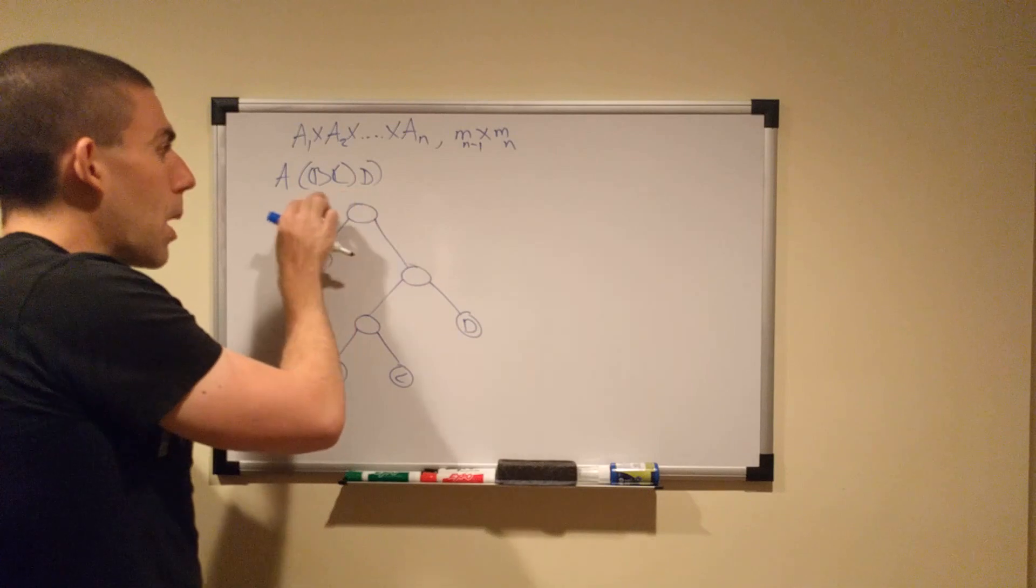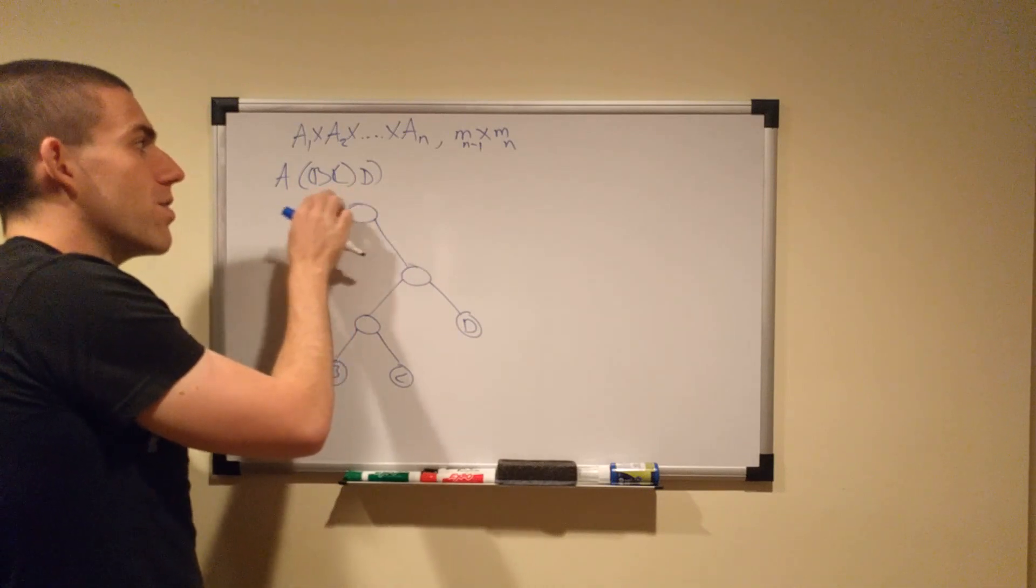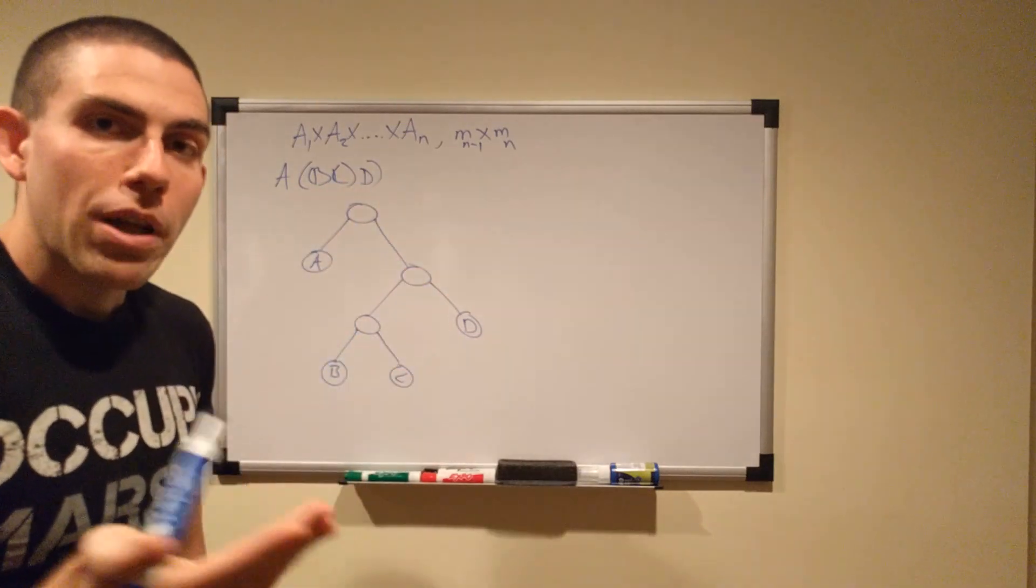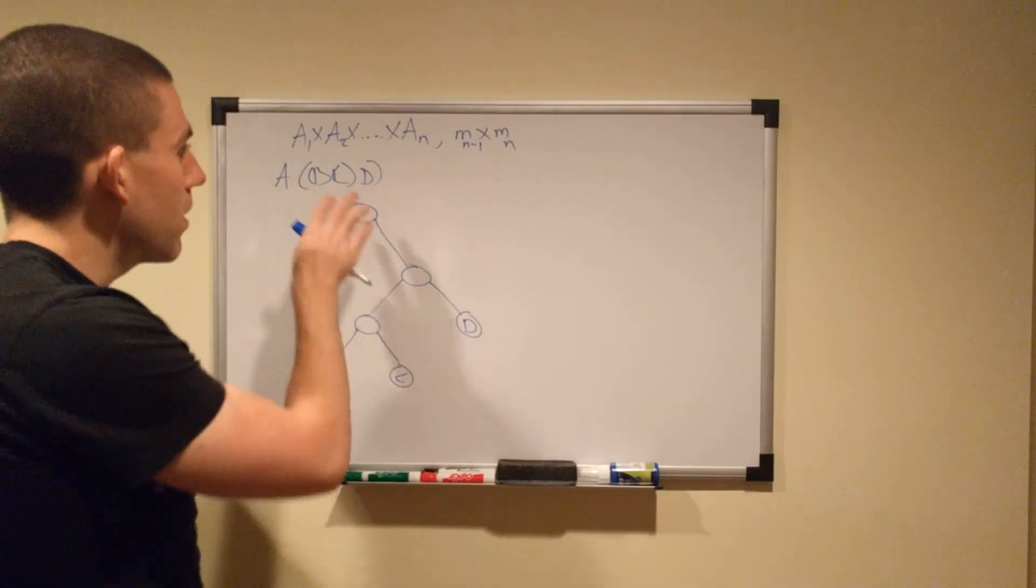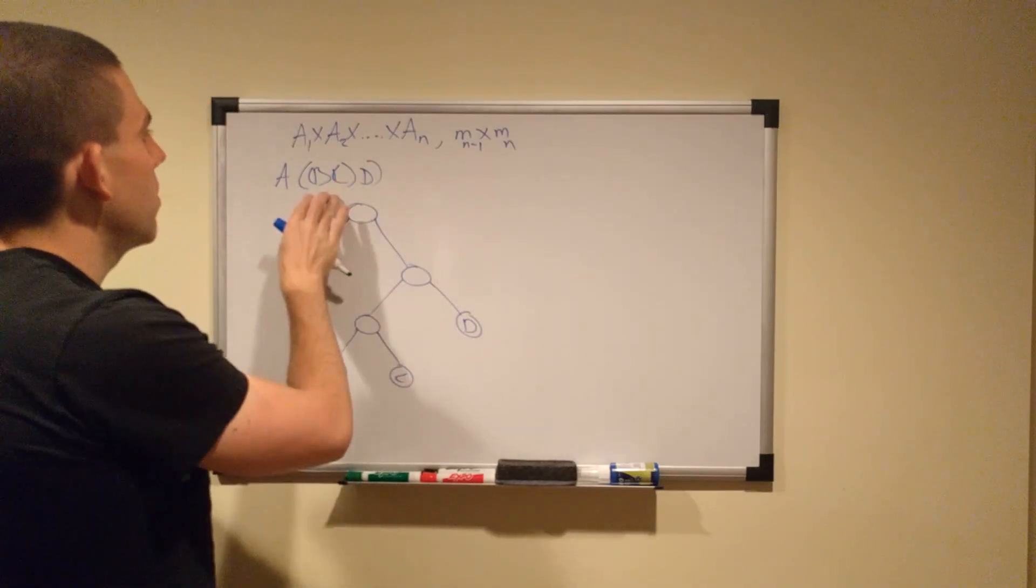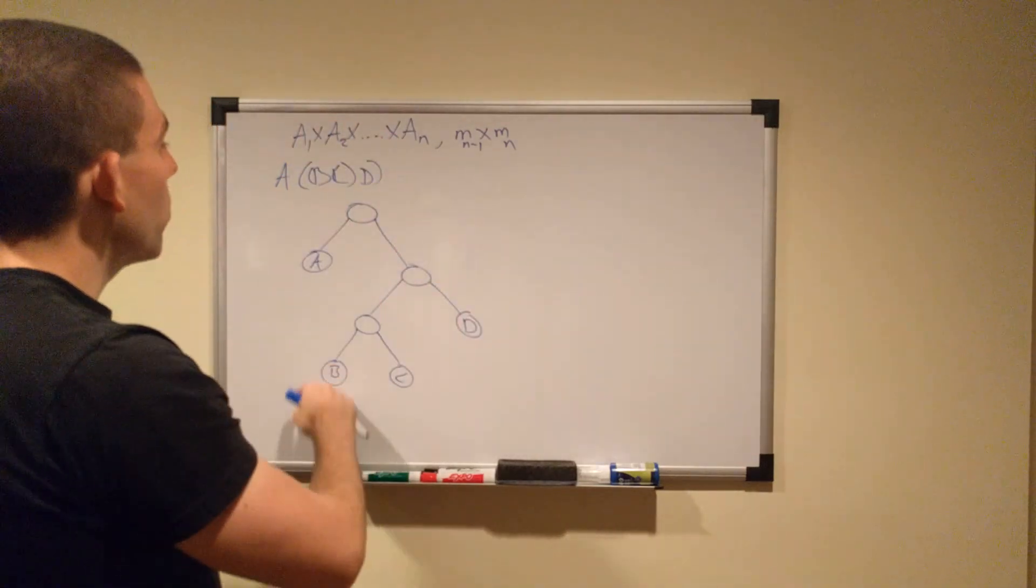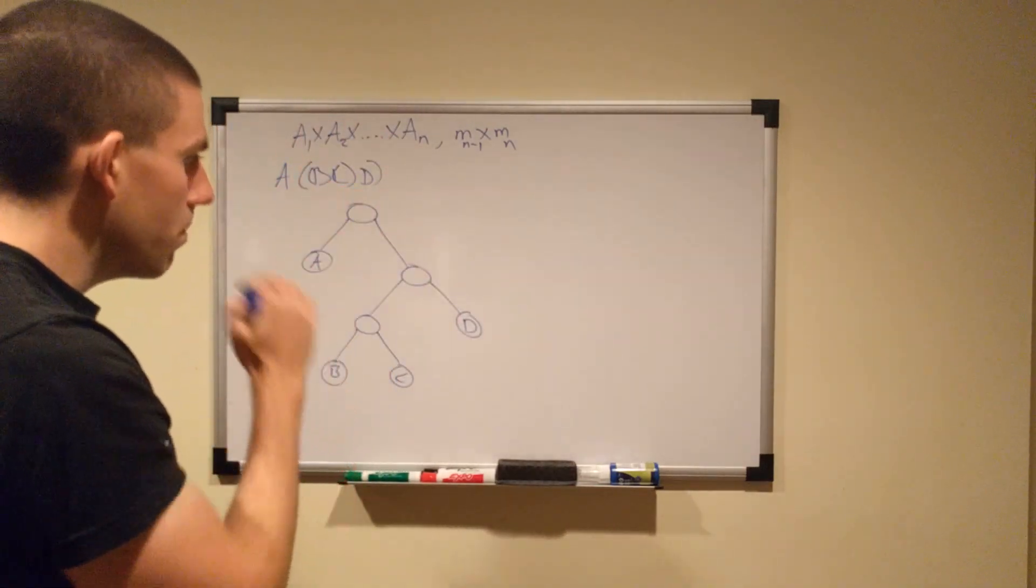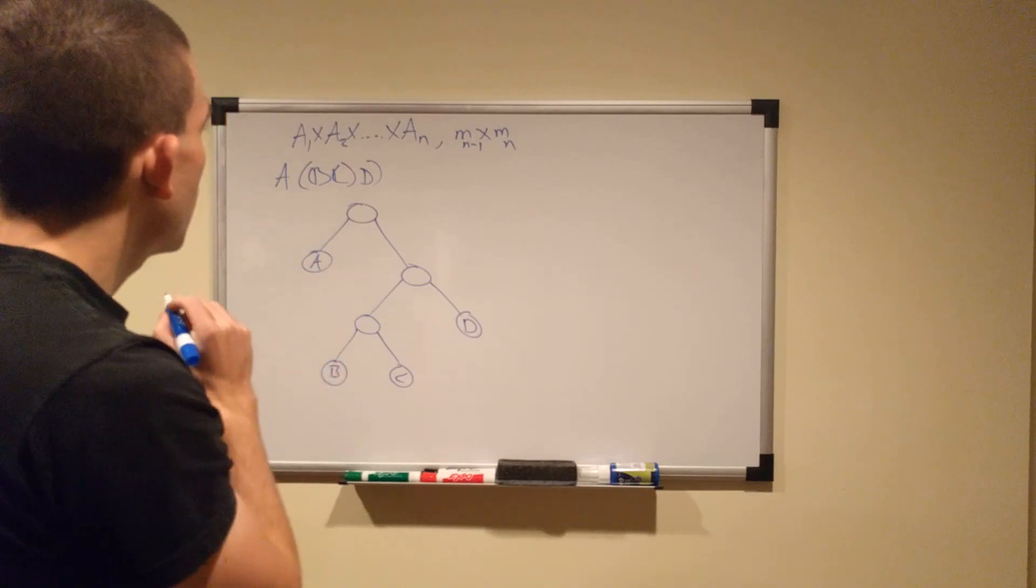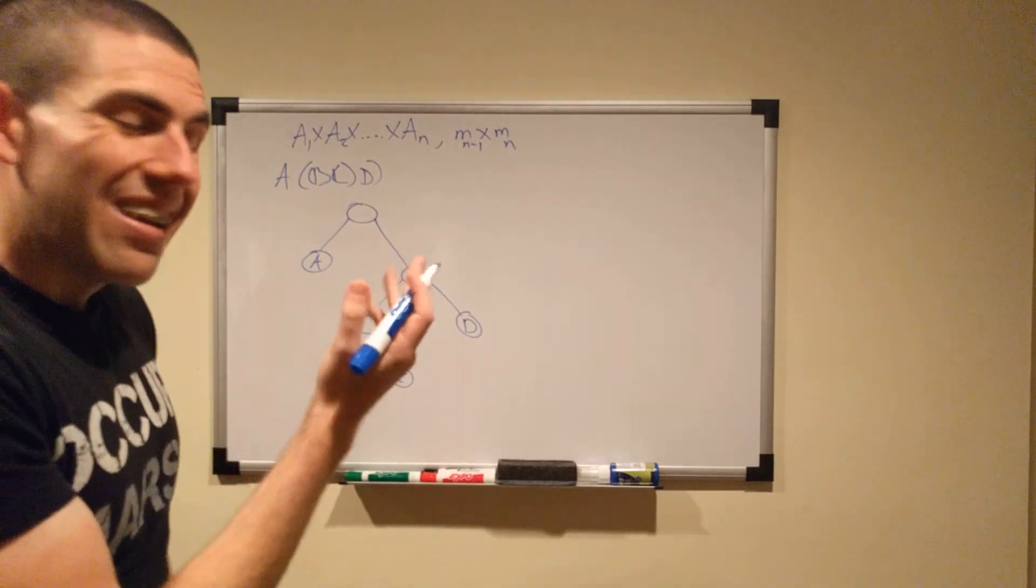So that means that this is the optimal way of doing this. BC is obviously the optimal way of multiplying BC because you can't permute. But then BCD, this is the optimal way. And then A times that product is the optimal way. And all the way up to the top.